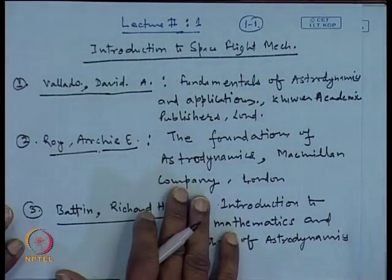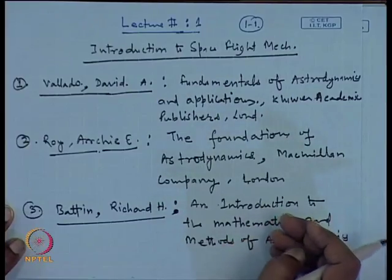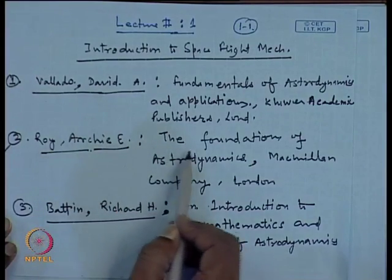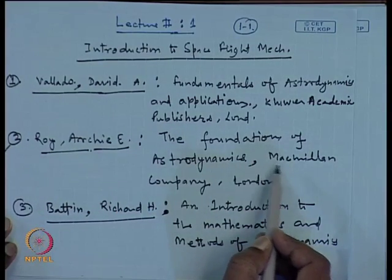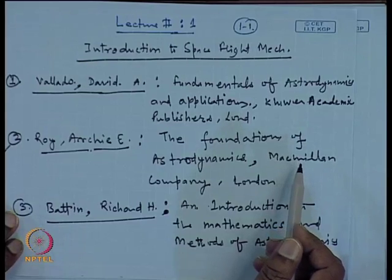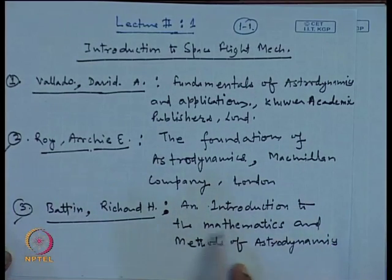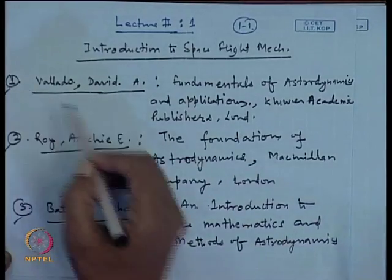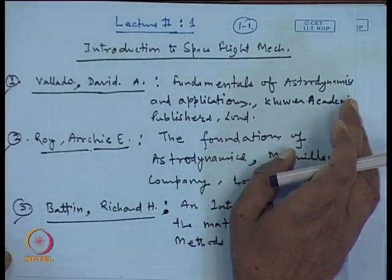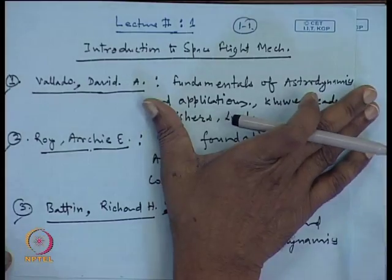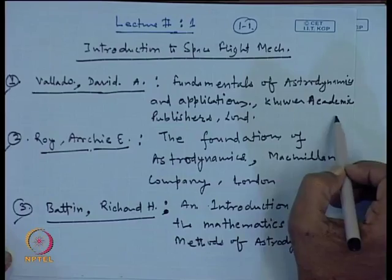All these books are basically concerned with celestial mechanics. The Archie Roy book comprehensively discusses reference frames and the motion of celestial bodies. The Battin book describes the complete mathematics. It takes into account satellites and reference frames are comprehensively described.